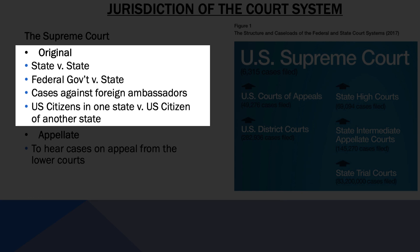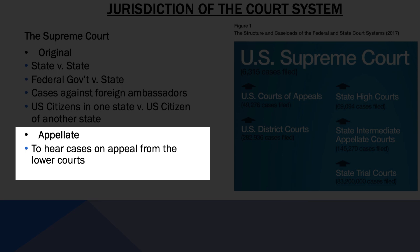Original jurisdiction also applies to cases between the federal government and one of the 50 states, cases involving foreign ambassadors, and cases brought by citizens of one state against citizens of another state. The other type of jurisdiction is appellate jurisdiction, which refers to the court's ability to hear cases on appeal from a lower court, meaning the case has already been tried and lower-level judges have already rendered an opinion. Almost all of the cases heard by the Supreme Court fall under its appellate jurisdiction. In these cases, the court only reviews the application of the law by lower federal or state courts, and no new evidence or testimony is presented.